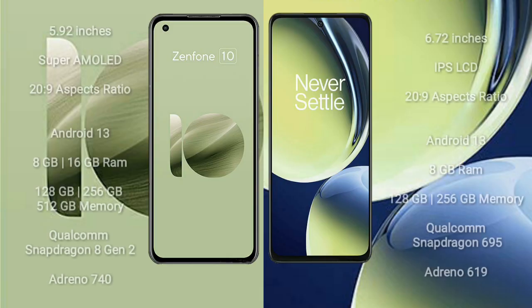Asus Zenfone 10 comes with a 5.92-inch Super AMOLED display and an aspect ratio of 20:9. OnePlus Nord CE 3 Lite comes with a 6.72-inch IPS display and an aspect ratio of 20:9.